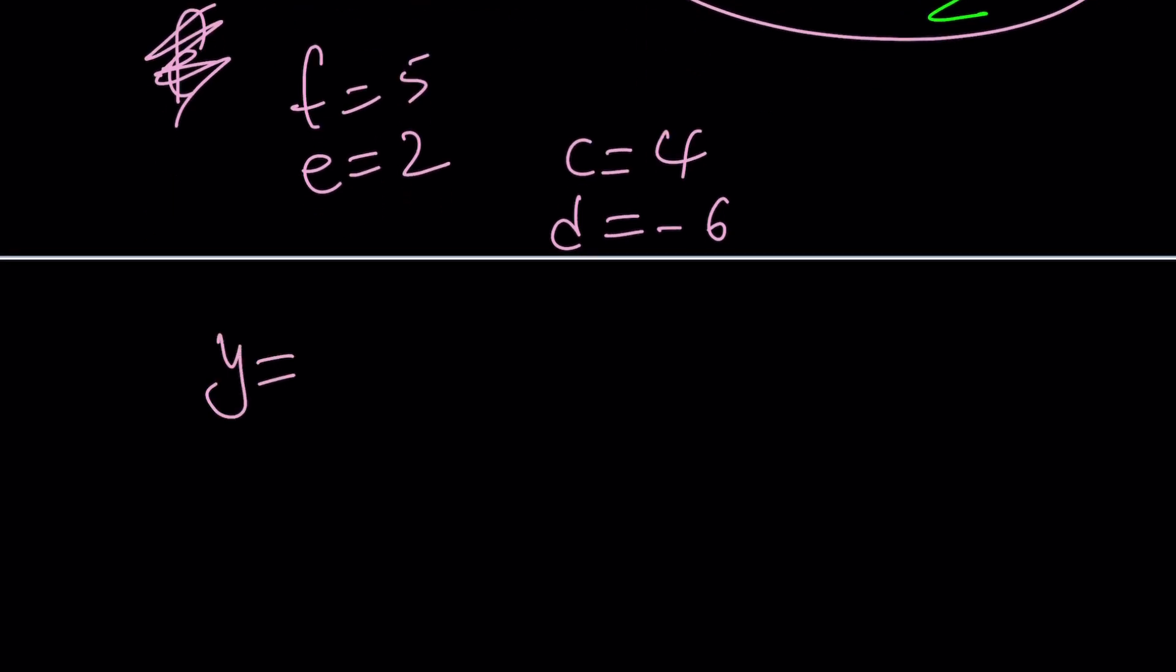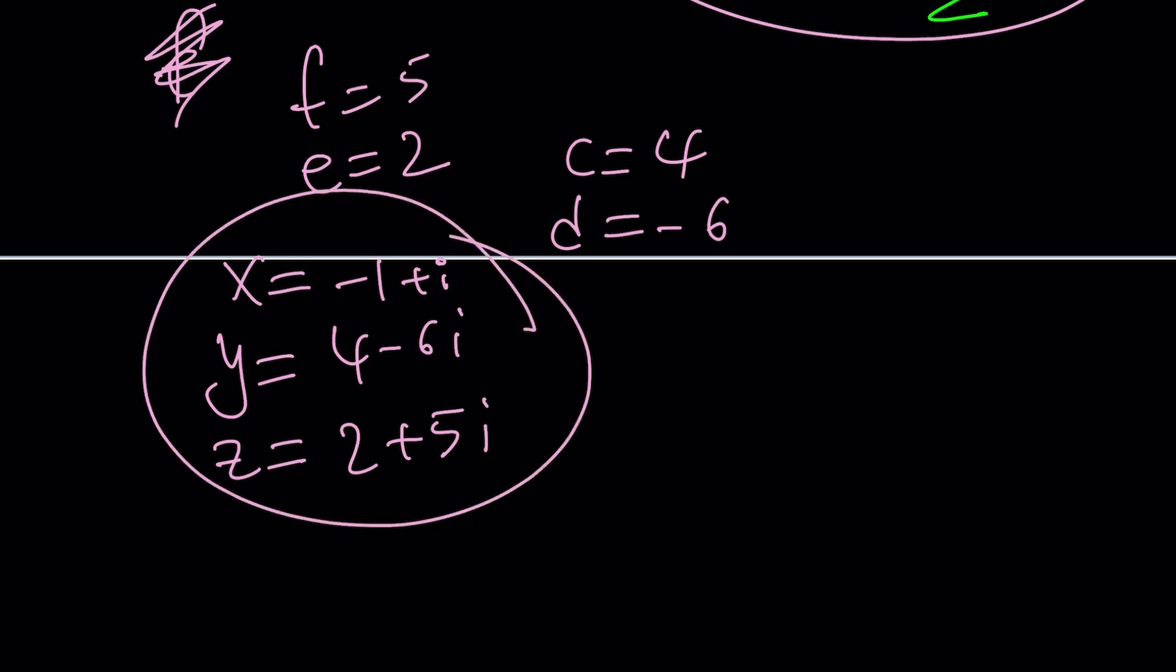so that means y is equal to c plus di, which is 4 minus 6i. z is equal to e plus fi, which is 2 plus 5i. And x should be a number such that when you add these all up, the sum should be 5, so it's going to be negative 1. And this is going to be negative i, so it's going to be like plus i. If you add x, y, z, you should be getting 5. But here's the million dollar question.